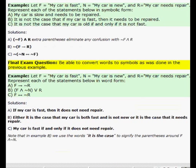Now let's look at some examples where we convert words to symbols and then also where we convert symbols to words. Let's start with the first example. My car is slow and needs to be repaired. F represents my car is fast and N represents my car is new and R represents my car needs repair.